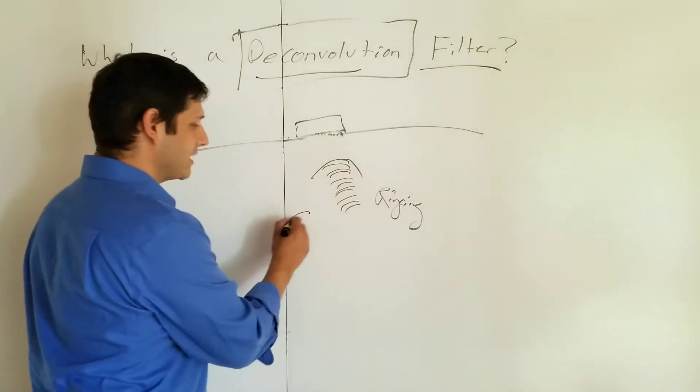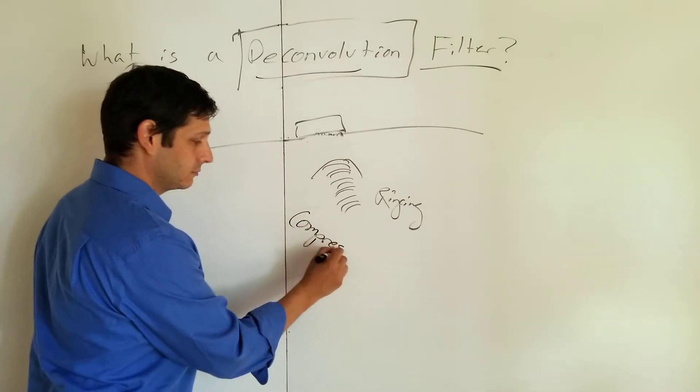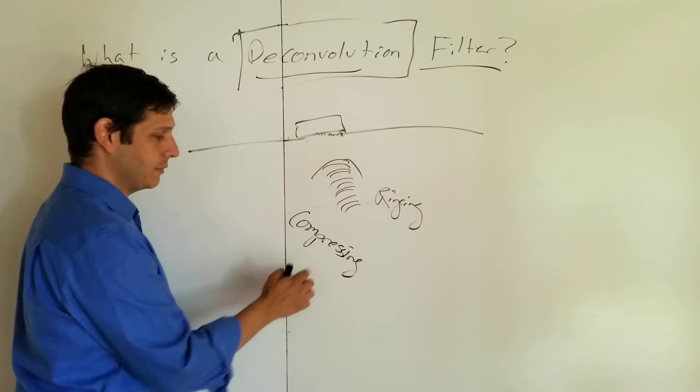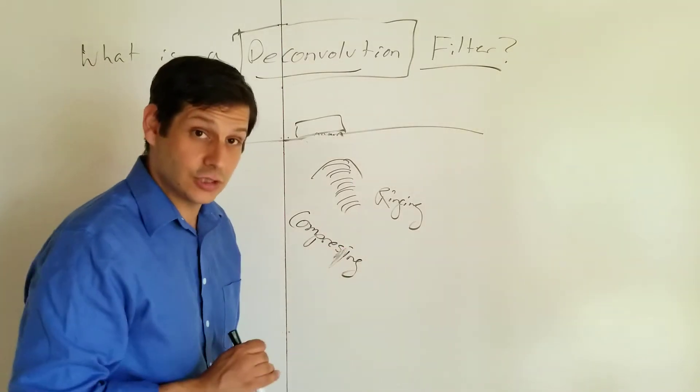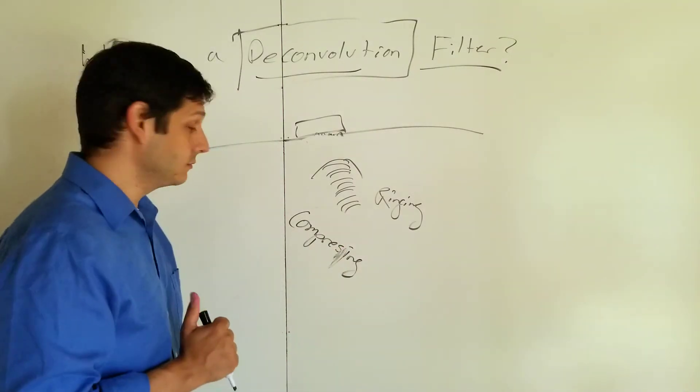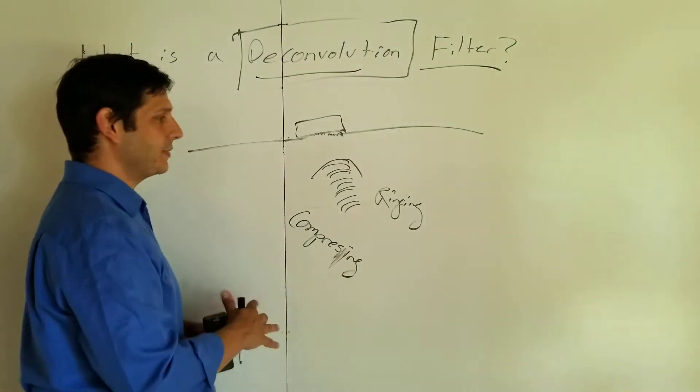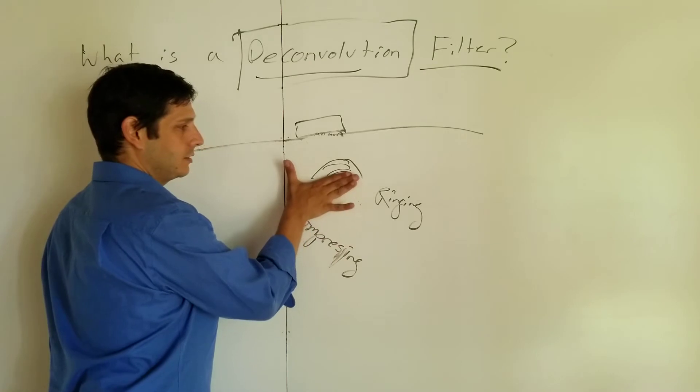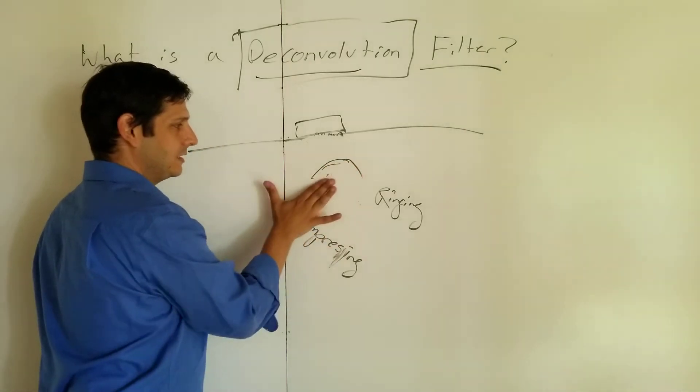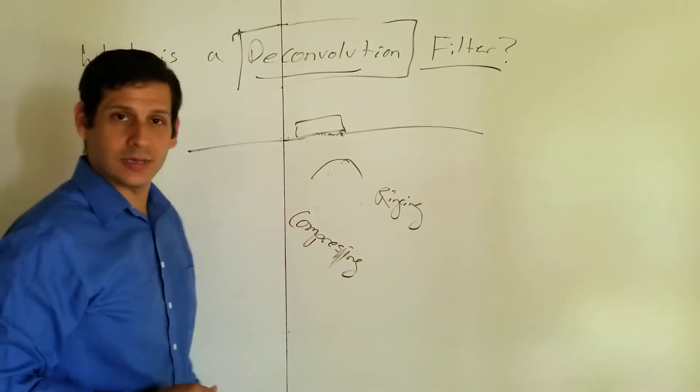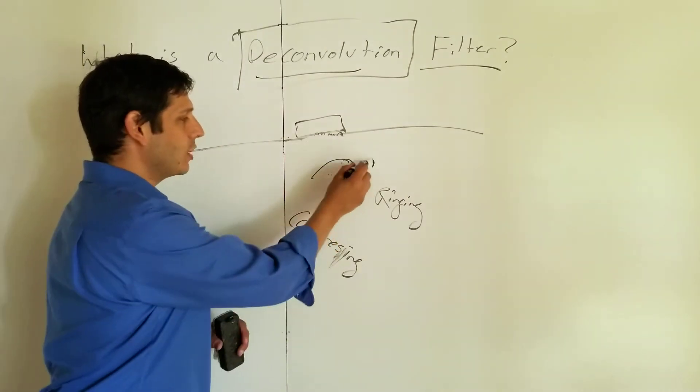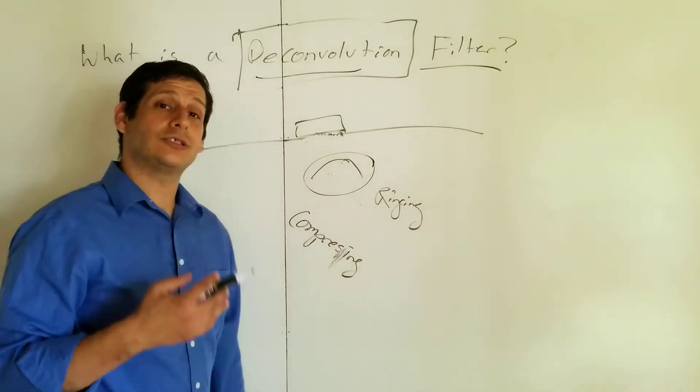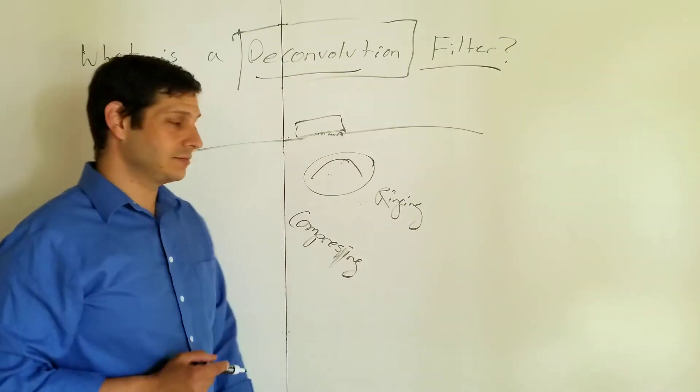So it compresses the signal. So by compressing the signal, what happens is now in your data set, this all gets squished up into this one hyperbola. And that is what you're left with. And so you have a much cleaner, much nicer data set to look at.